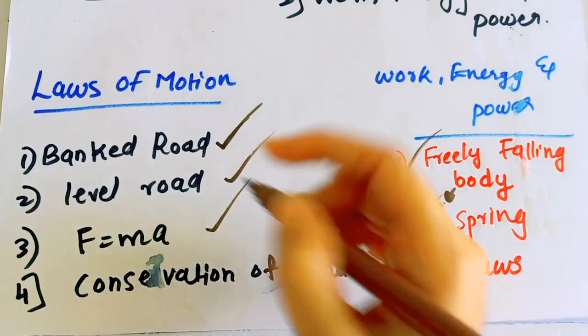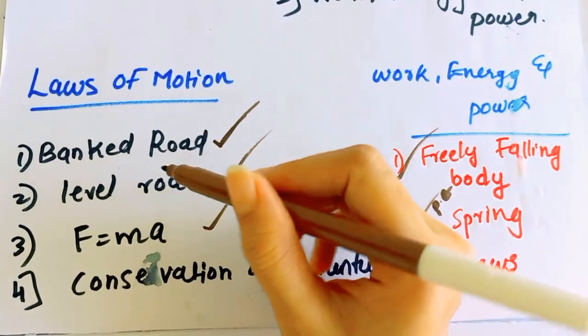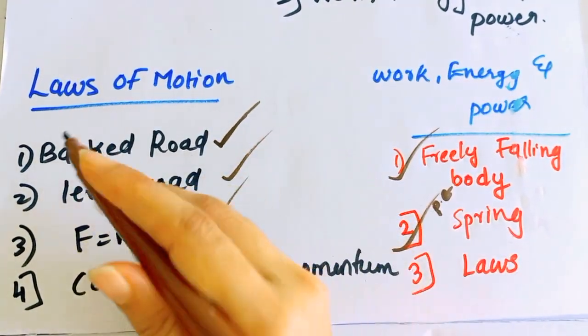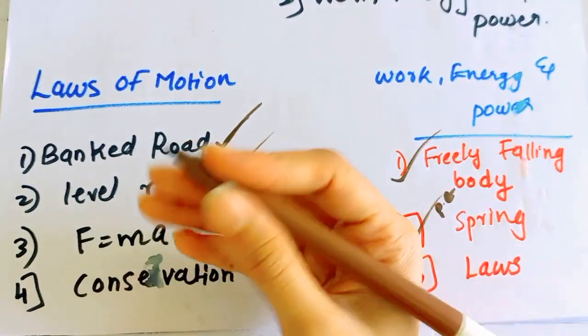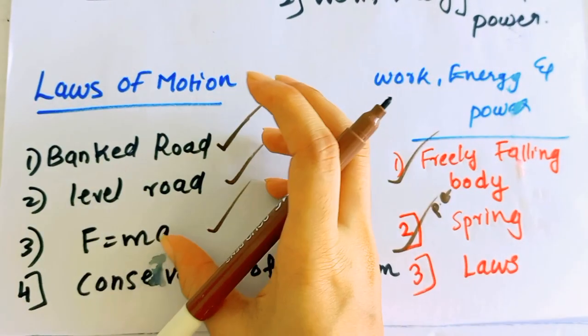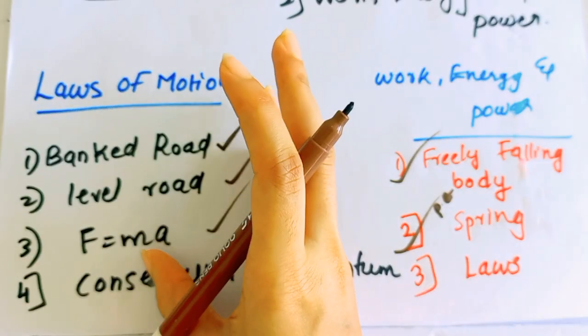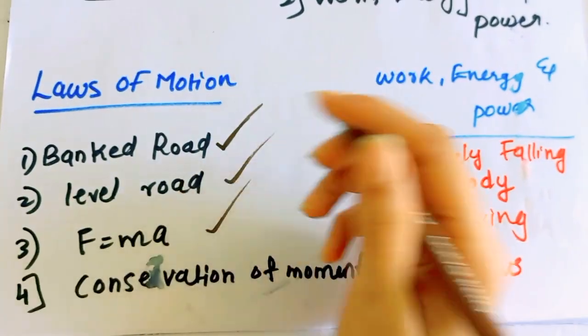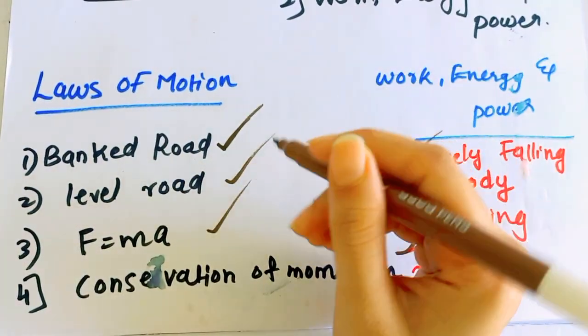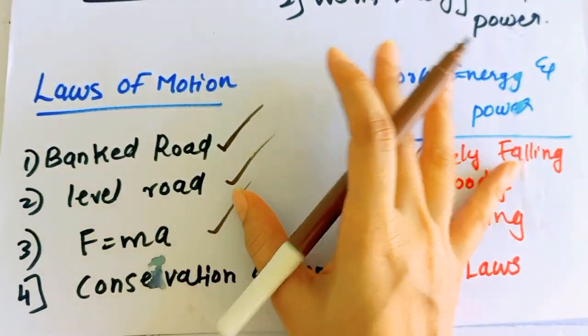In this video, we have uploaded a banked road, level road, and freely falling body. We have uploaded these to our channel. F equals MA - there is a link in the description.